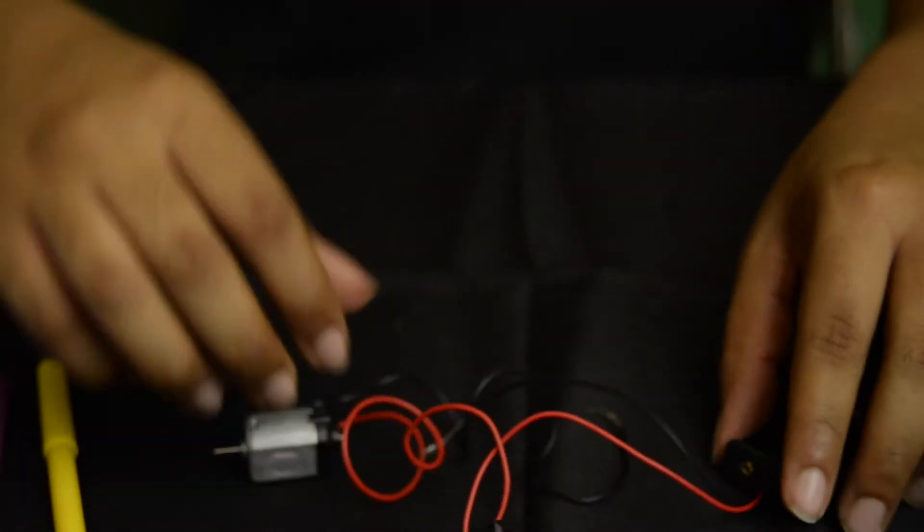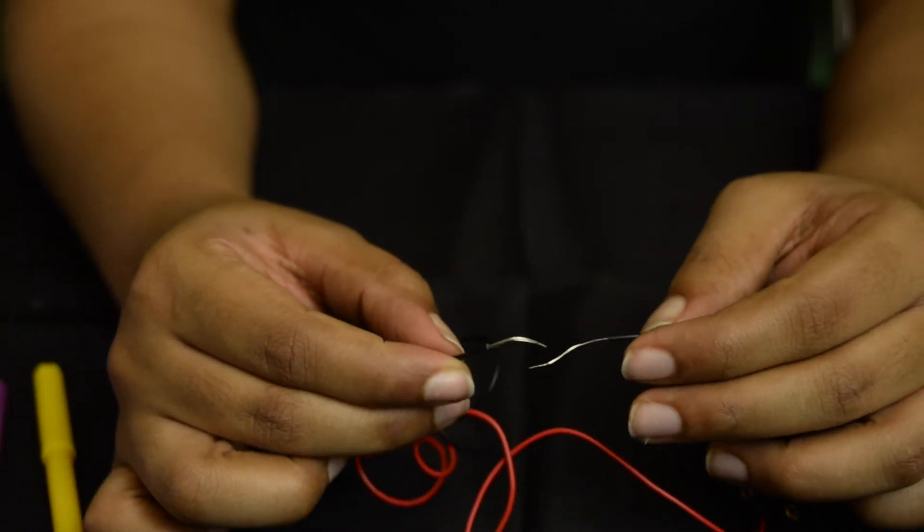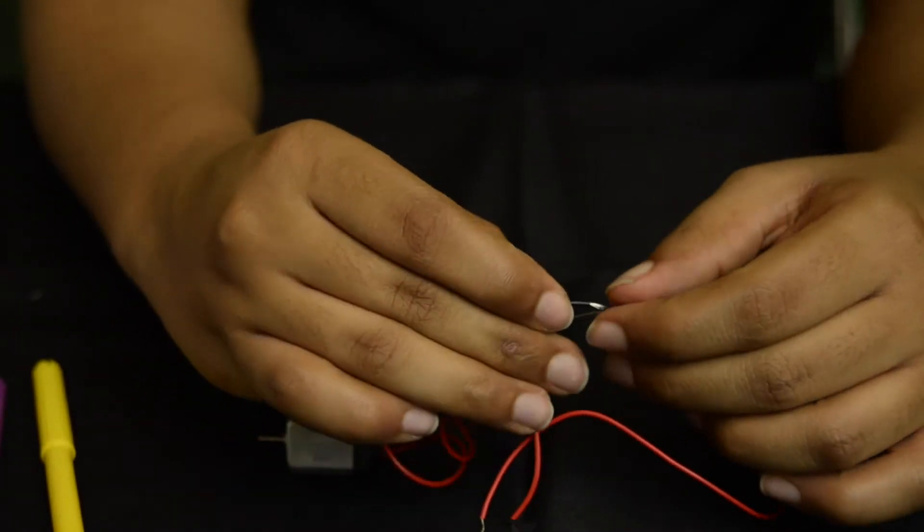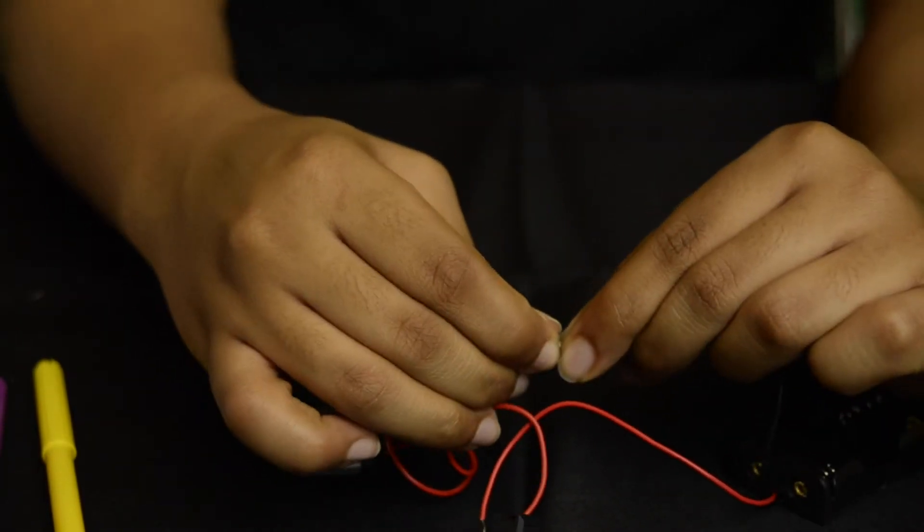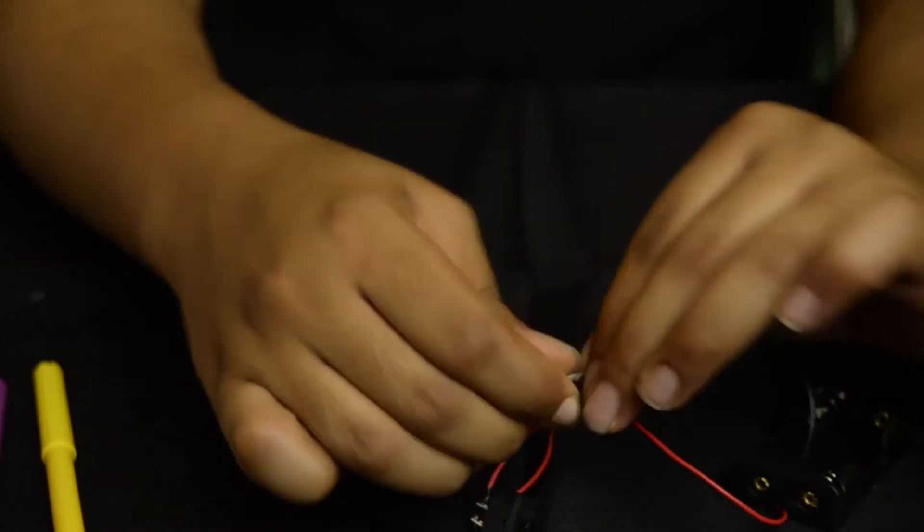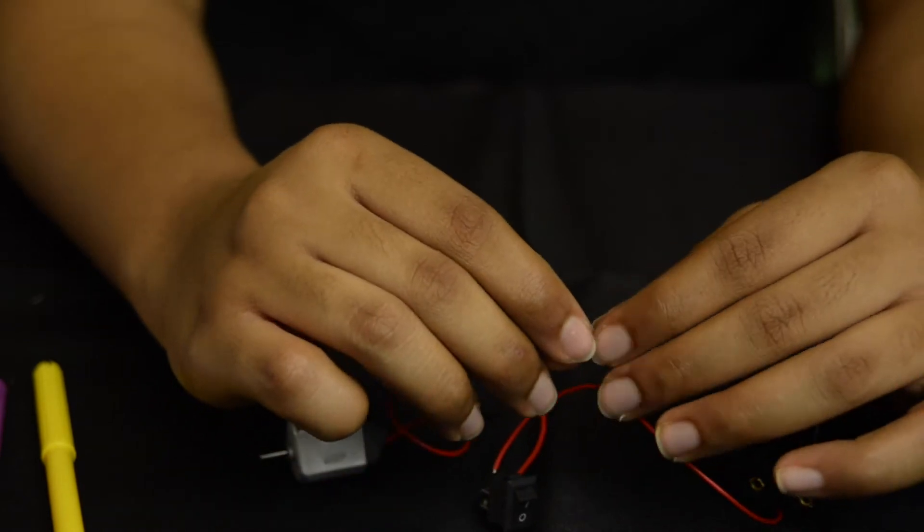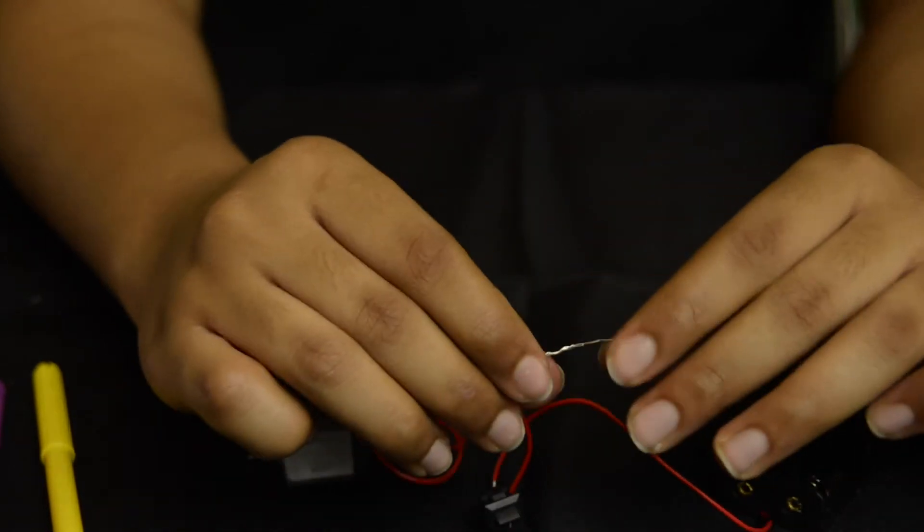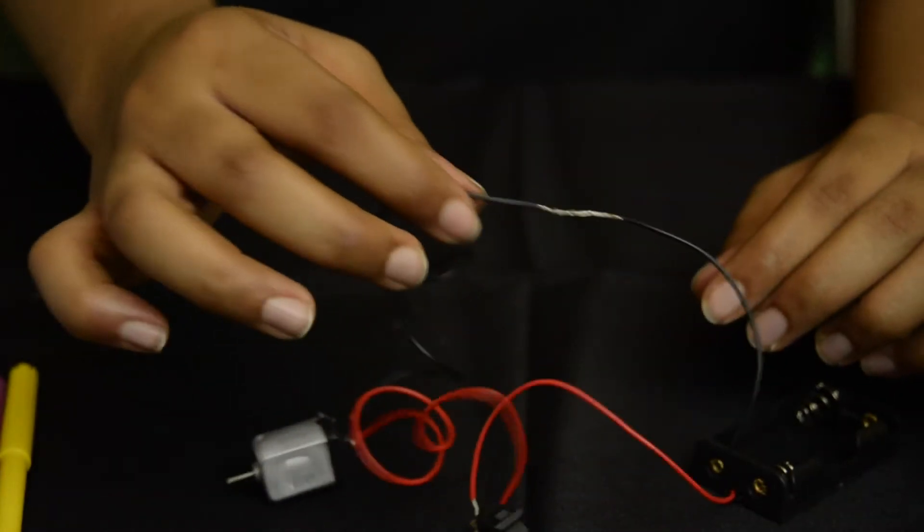The next step is to connect the black lead wires of the motor and battery pack. Simply twist the exposed wires together. You're going to want to wrap the exposed wires with electrical tape to make sure it's nice and secure.